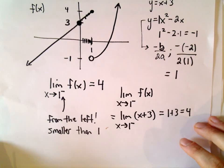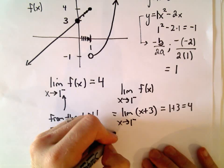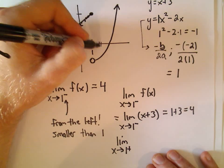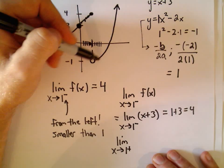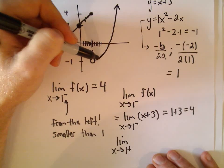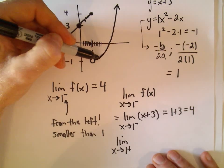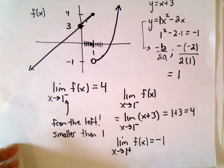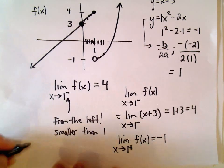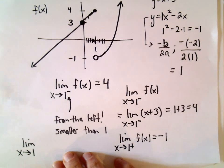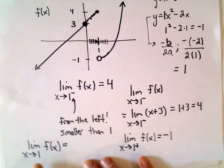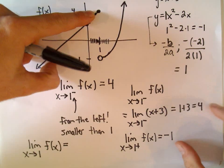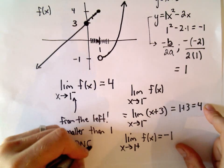The question didn't ask this, but suppose we were asked what's the limit as x approaches 1 from the right. If I take x coordinates a little bit bigger than 1, I'm sitting on the graph of the parabola. As x gets closer and closer to 1 from the right, the y coordinates get closer and closer to negative 1 — they never actually hit negative 1 but get arbitrarily close. So the limit as x approaches 1 from the right equals negative 1. If the question had said what's the limit as x approaches 1 without specifying a side, the limit from the left must equal the limit from the right for the limit to exist. Since we're getting different values — 4 and negative 1 — the limit as x approaches 1 does not exist.